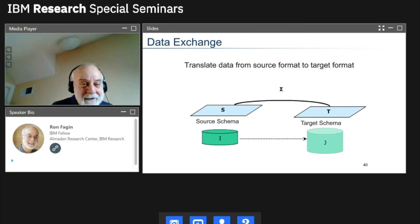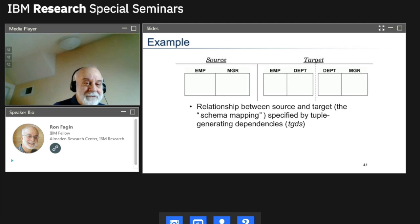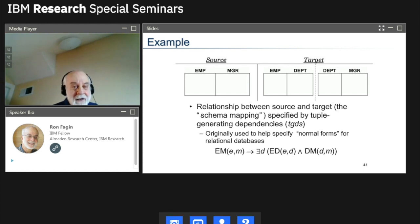So data exchange. So you have a source database and a target, and you're trying to convert data from one format to another. I'll give an example in a second. So here's the example. So let's say you're merging two different companies. One of them has an employee manager relationship and the other has an employee department department manager relationship. And we want to merge these two. So we want to somehow combine this. So here's where we're going to use data exchange. What do we do? So now there's something called tuple generating dependencies or TGDs, which has been used in the past for a number of contexts, including normalization. And this is what we're going to use to describe it. As I said, it's originally used for other senses. So here's the tuple generating dependency or TGD we'd use in this case. We say if EM is employee manager relationship. So employee E has manager M and there's some department D where employee E is in department D and department D is managed by manager M.